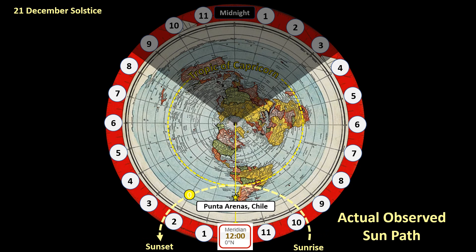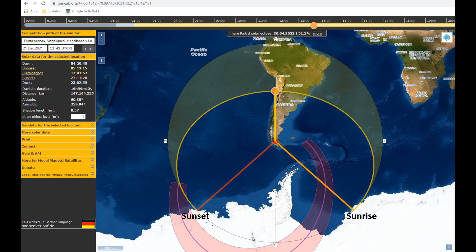And if you have ever been south of the Tropic of Capricorn and paid attention to the world around you, you would know that this is the actual observed sun path. It is not around the north pole like it is seen in the northern hemisphere — it is in the complete opposite direction, around the south pole. I have been there and I have seen this with my own eyes. This is also confirmed by the suncalc.org website, and what is nice about this website is that this graphic will show you the path of the sun from any location for any day of the year.